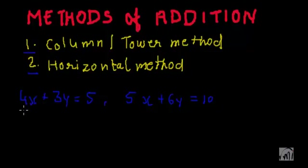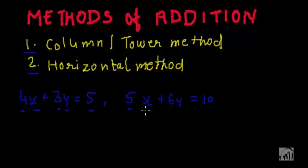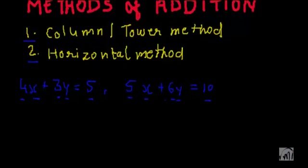The first one is 4 times x plus 3 times y equal to 5, and the second is 5 times x plus 6 times y equal to 10. So now if we use the column method to add these two equations,